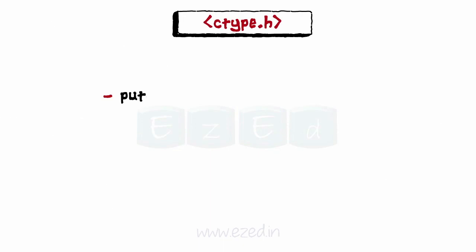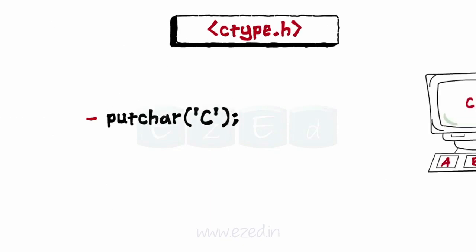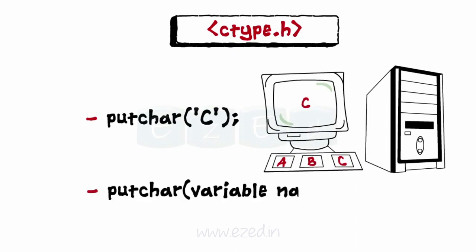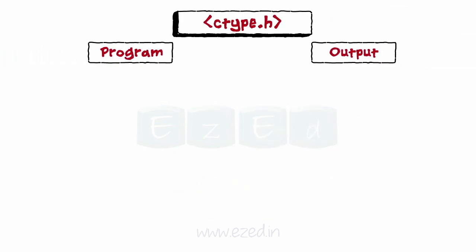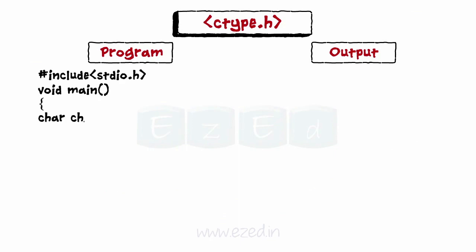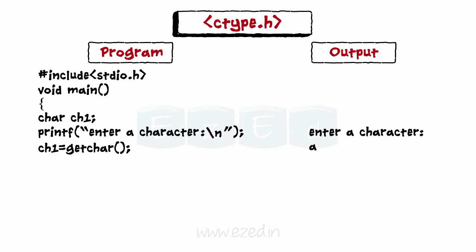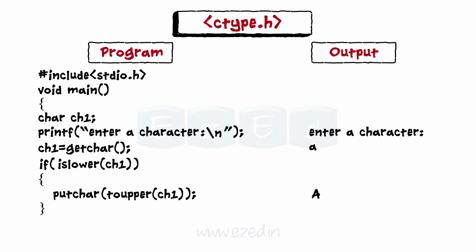There is a function called putChar, which is used to write a single character at a time on the terminal screen. This is the general form. Here the variable ans is of type char, and thus this statement places the character 'y' on the terminal screen. We write a program to show use of the putChar function. We start by declaring the main function followed by the variable ch1 of type char. Then we ask the user to enter a character, which is scanned in through getChar. An if condition checks if the entered character is in lower case; if yes, it is transformed into upper case using the toUpper function.